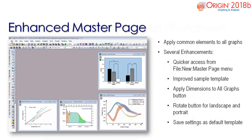The master page is a feature in Origin that is used to allow you to apply common elements such as company logos and date stamps to all graphs. Several improvements have been made to the master page in this version.